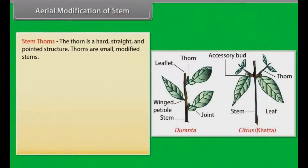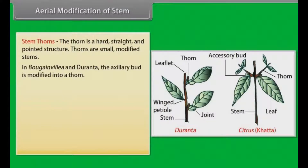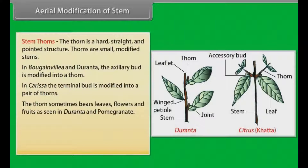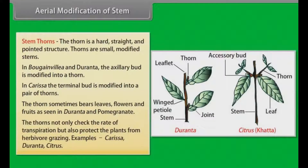The thorn is a hard, straight, and pointed structure. Thorns are small, modified stems. In Bougainvillea and Duranta, the axillary bud is modified into a thorn. In Carissa, the terminal bud is modified into a pair of thorns. The thorn sometimes bears leaves, flowers, and fruits as seen in Duranta and pomegranate. The thorns not only check the rate of transpiration, but also protect the plants from herbivore grazing. Examples: Carissa, Duranta, Citrus.